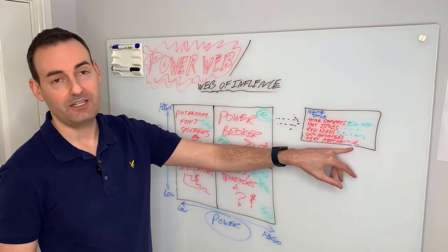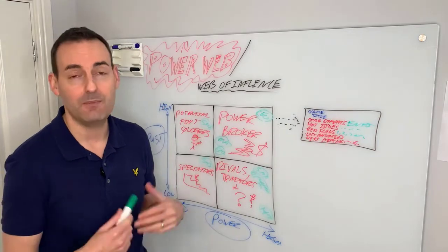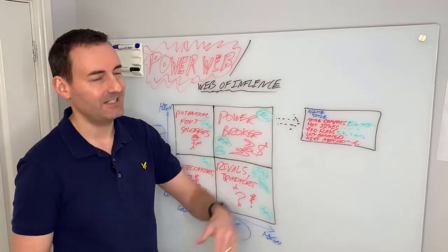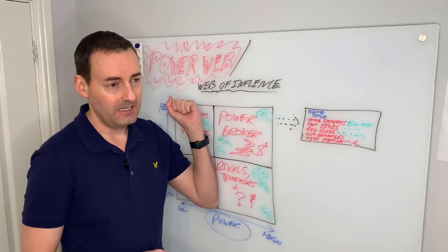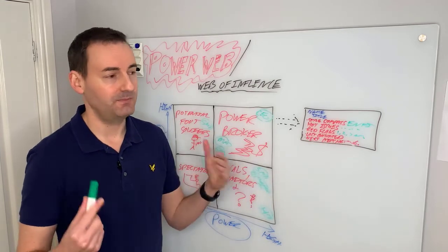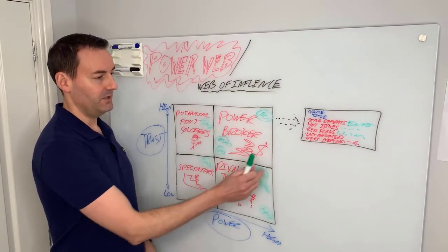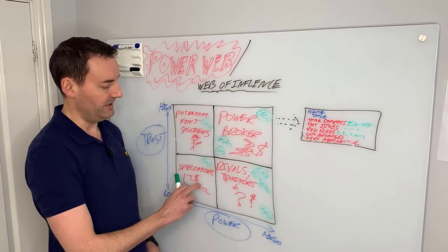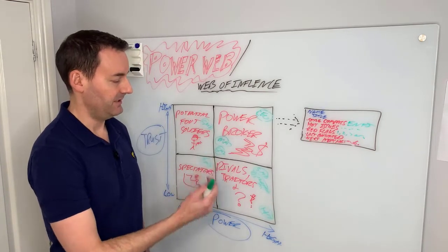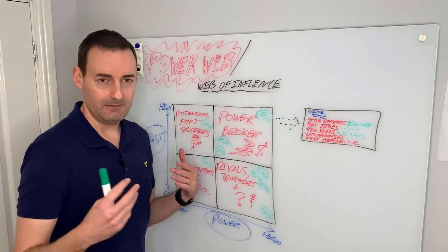The last point is next steps or actions. What are your next steps with this person? If they're a power broker, you should have some — how do I get in front of them, how do I develop a relationship? Next actions could be: reach out, invite them for a catch-up, send them a white paper, set up a quarterly review, or set up a meeting about your project or proposal. For spectators, the next step could simply be 'do nothing.' For rivals and traitors, it could be 'monitor' or keep an eye on overlapping projects.